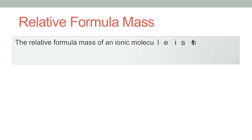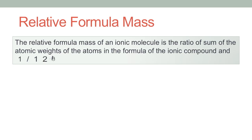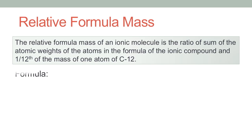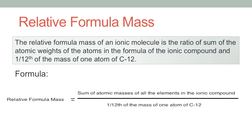The relative formula mass of an ionic compound is the ratio of the sum of the atomic masses of all atoms in the formula of the ionic compound to one twelfth of the mass of one atom of C12. The formula is: relative formula mass equals the sum of the atomic masses of all elements in the ionic compound divided by one twelfth of the mass of one atom of C12, which is 1 AMU.